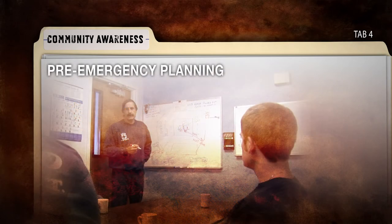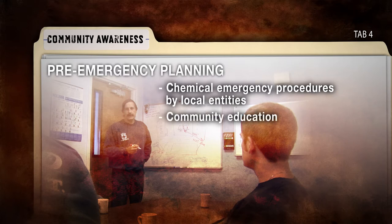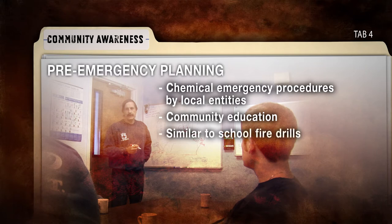In order to effectively utilize evacuation, shelter in place, or a combination of these tools, the local community, fire department, or local emergency planning commission must have conducted pre-planning on the process they will follow in case of a chemical emergency. This includes education of the community on the procedures to follow. This is similar to the planning that schools do to teach the students and teachers what they should do in case of a fire.